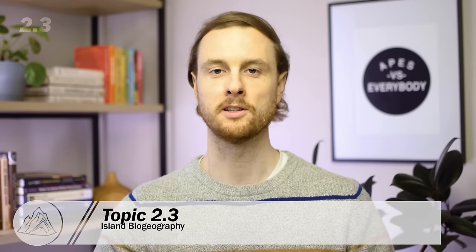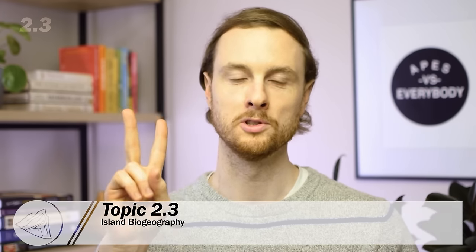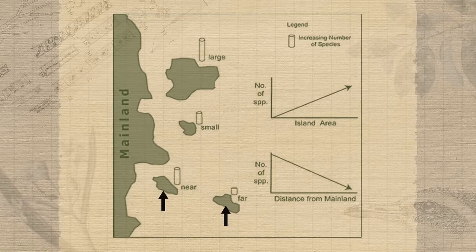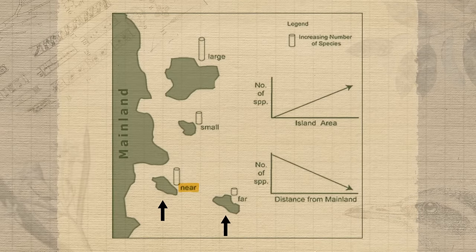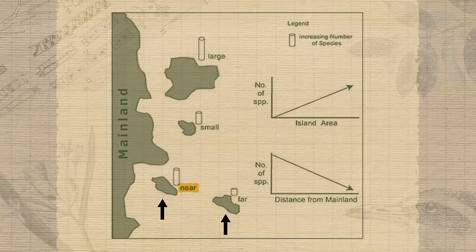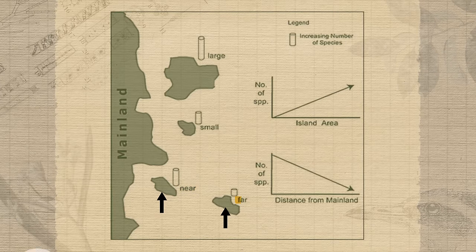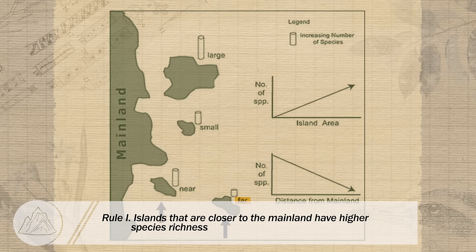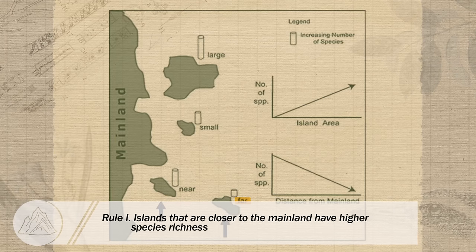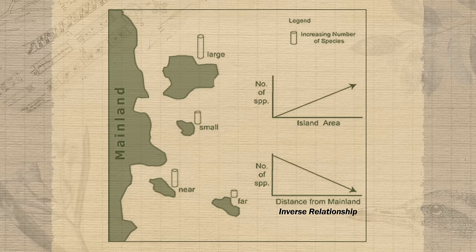On topic 2.3 we'll take a look at the theory of island biogeography, which really just boils down to two simple rules. If we have two islands of equal size but one is closer to the mainland, the closer island would likely have higher species richness — more species are capable of migrating there. The further away from the mainland an island is, the fewer species are able to fly or swim there. So if we plot distance from the mainland and number of species on a graph, we see an inverse relationship between the two.